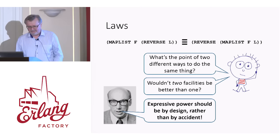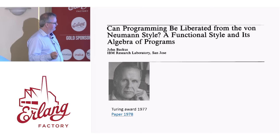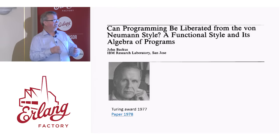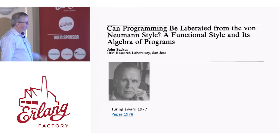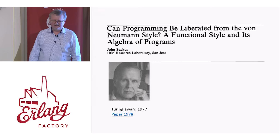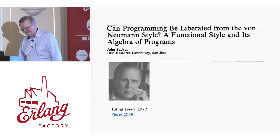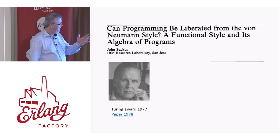Now I want to skip ahead more than 10 years to another landmark paper by John Backus. John Backus won the Turing Award in 1977. Everybody's heard of BNF — Backus Normal Form — he invented the notation we use for grammars, but that's not what he got the Turing Award for. He got the Turing Award for developing the first Fortran compiler. By the time he got the award in 1977, Fortran was the most widely used programming language — the one that all programming language people love to hate. But one shouldn't let that affect one's understanding of what a huge contribution the first Fortran compiler was.